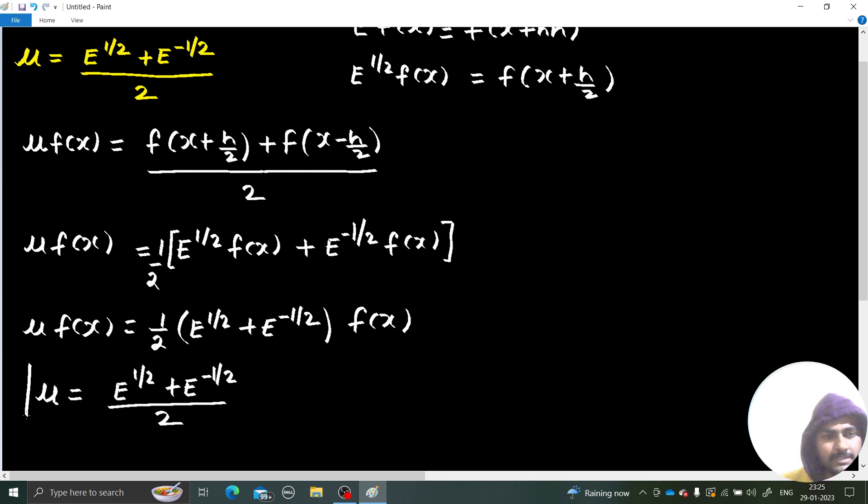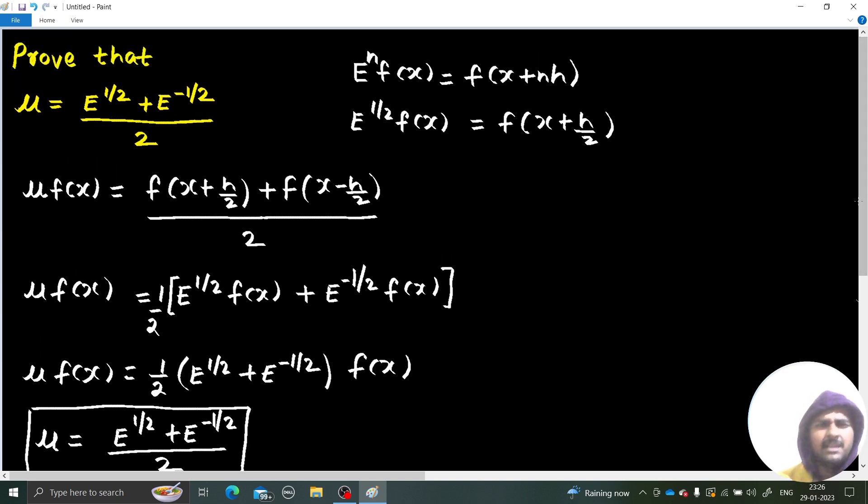So this was just a simple proof which we did today. Just a formality relation. We already saw how we can find a relation between forward difference operator and E, backward difference operator and E, central difference operator and E, and now at the end, relation between averaging operator and E.